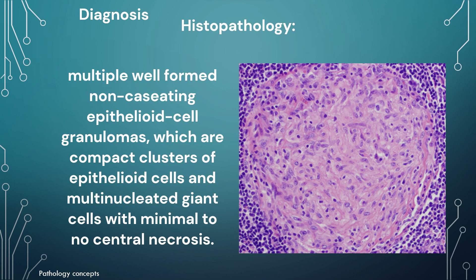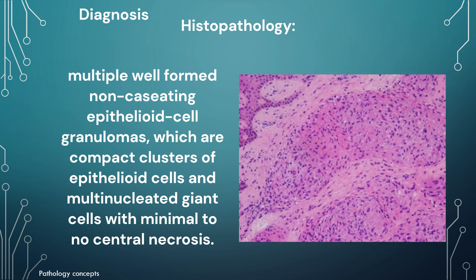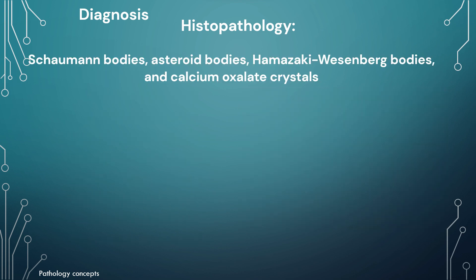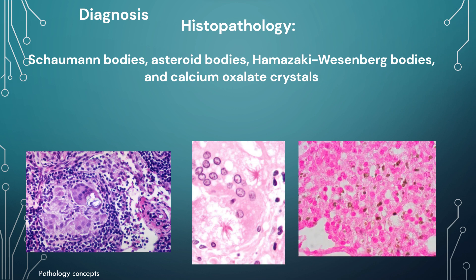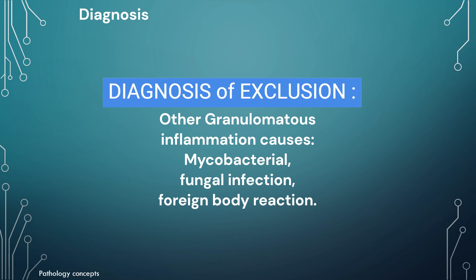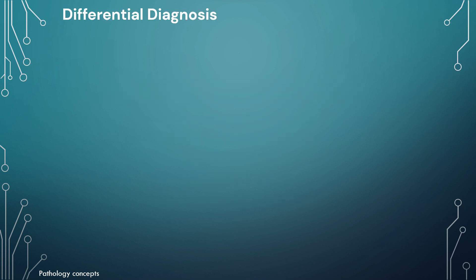Histopathologically, sarcoidosis is characterized by multiple well-formed non-caseating epithelioid cell granulomas in all affected organs and tissues. These are complex clusters of epithelioid cells and multinucleated giant cells with minimal to no central necrosis. Granulomas proceed either to resolution or conversion into hyaline connective tissue. Inclusion bodies such as Schaumann bodies, asteroid bodies, Hamazaki-Wesenberg bodies, and calcium oxalate crystals may be seen. Since sarcoidosis is a diagnosis of exclusion, biopsy specimens must be carefully examined to exclude fungal and mycobacterial infection, as well as foreign body reaction.